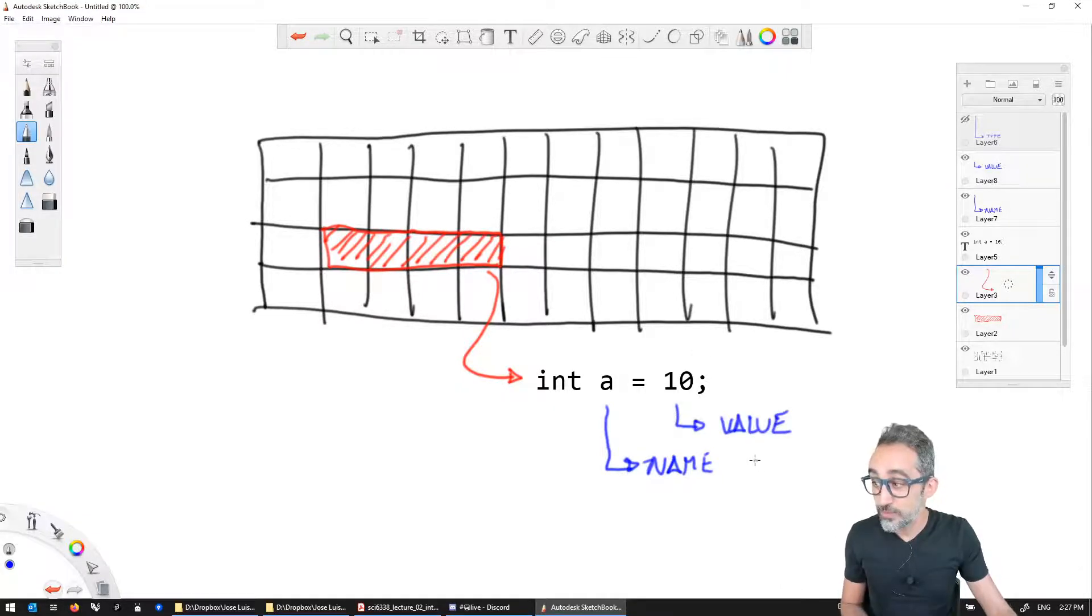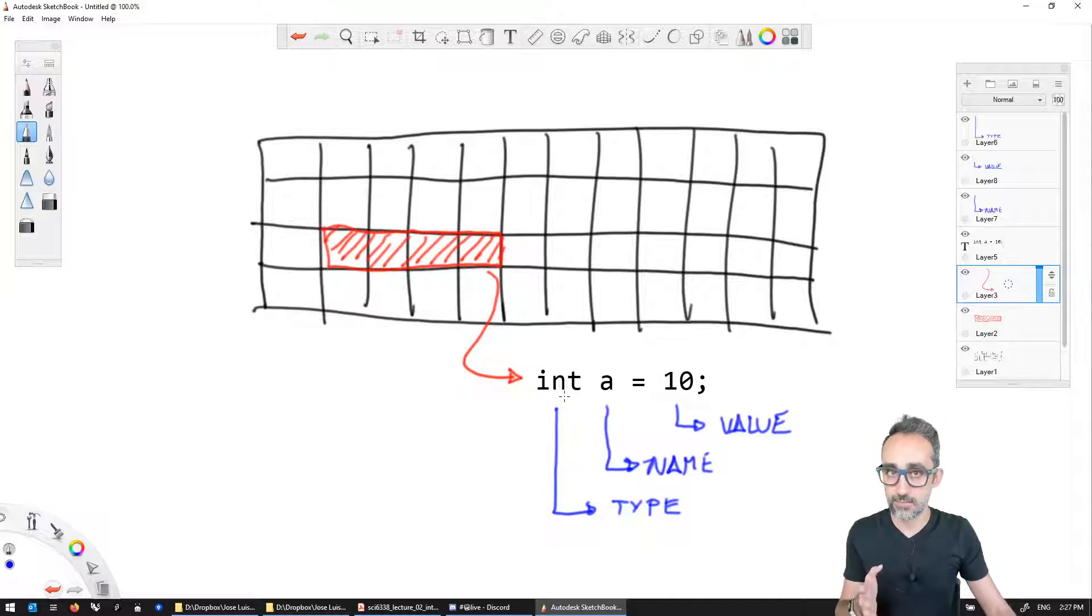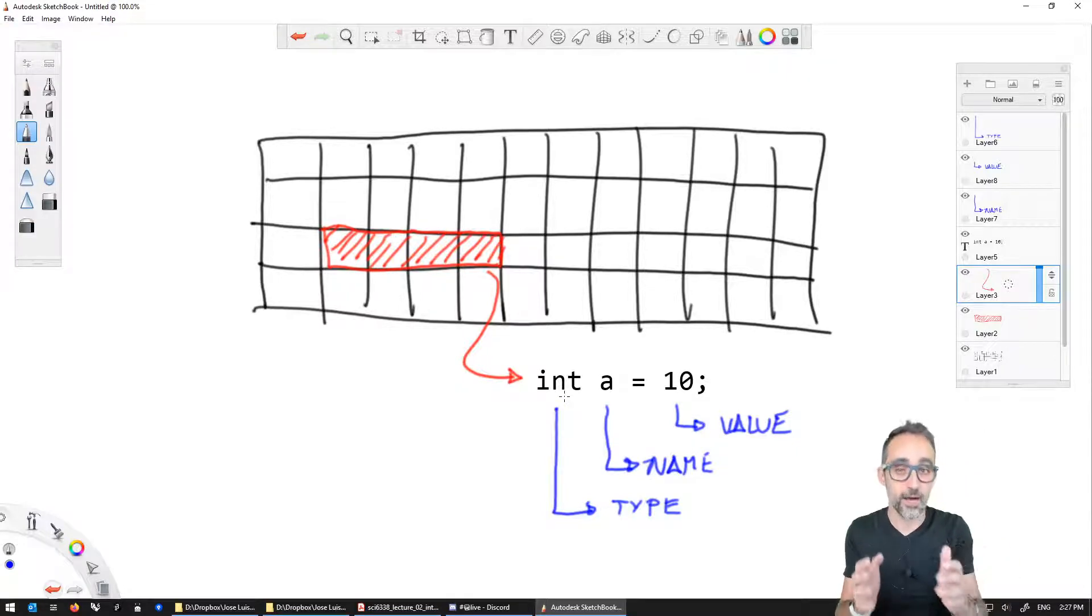The value I want to store in this memory spot is the number 10. The third thing is that this variable called A is always going to store data types of the type integer. That means A will only be able to store numbers that are integers, or numbers that do not have any decimal part.